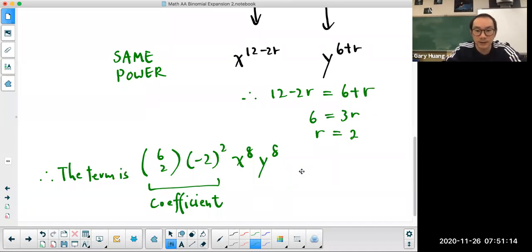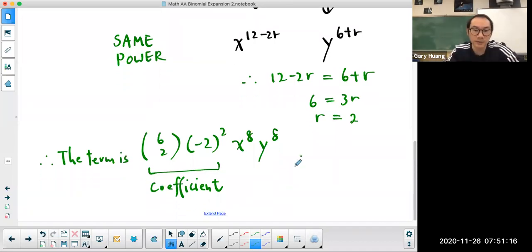Now, if it's a paper 1, you can leave it like that. If it's a paper 2, you would have to expand it, find out what 6 choose 2 is, and then multiply it by 4. And that would be the coefficient for this term, which x and y are raised to the same power.